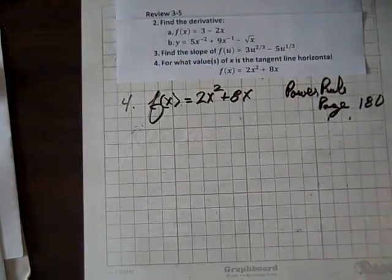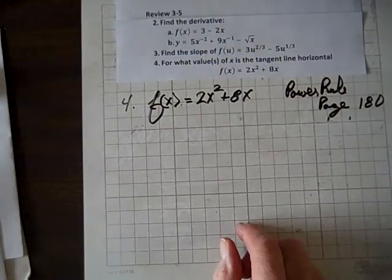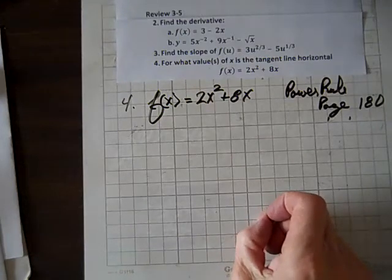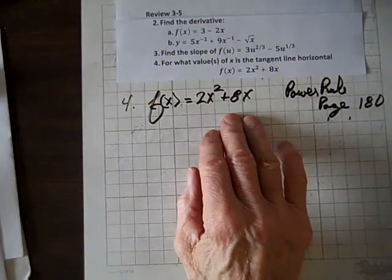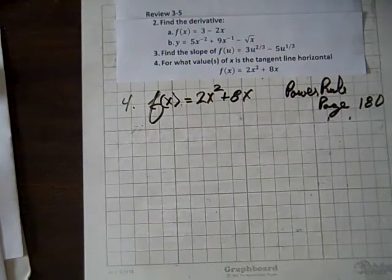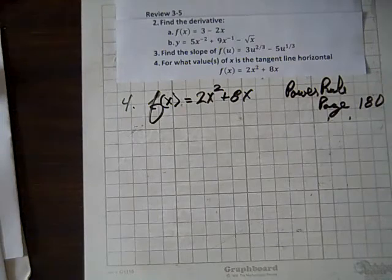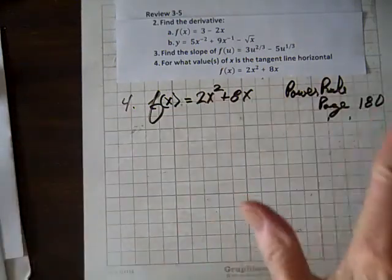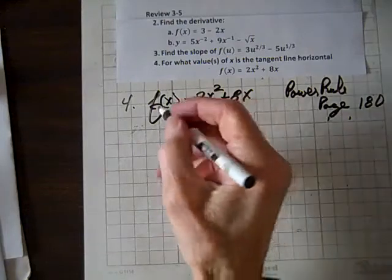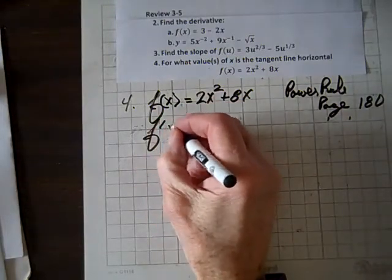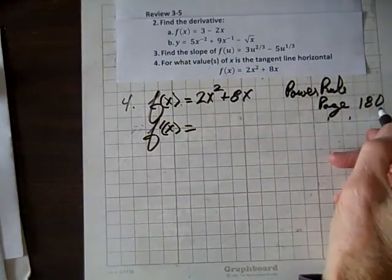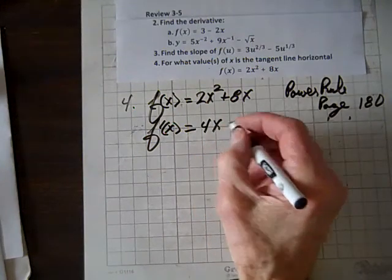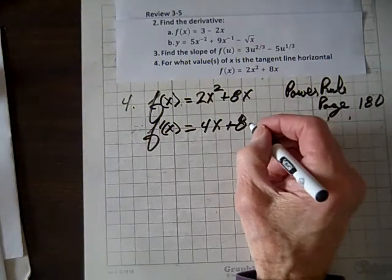And now the question is for four, for what value or values of x is the tangent line horizontal? Well, any time the derivative equals zero, then the tangent line is horizontal, because the slope of the tangent line is zero, and therefore it's flat, so it's either at a peak or a valley. So now let's find the derivative, so f prime of x, and again we're using the power rule on page 180, equals bring the two down, two times two is four, and we get x plus eight, the derivative of eight x is eight.